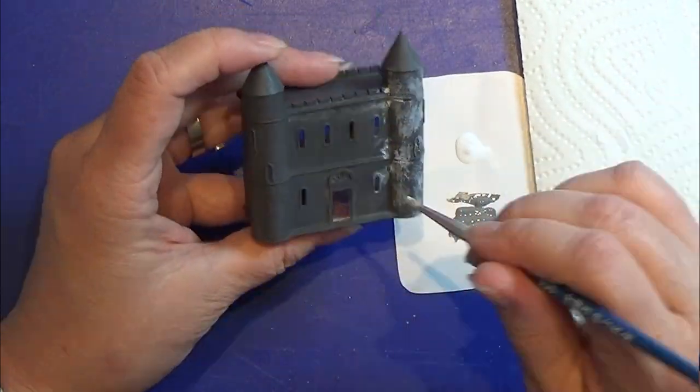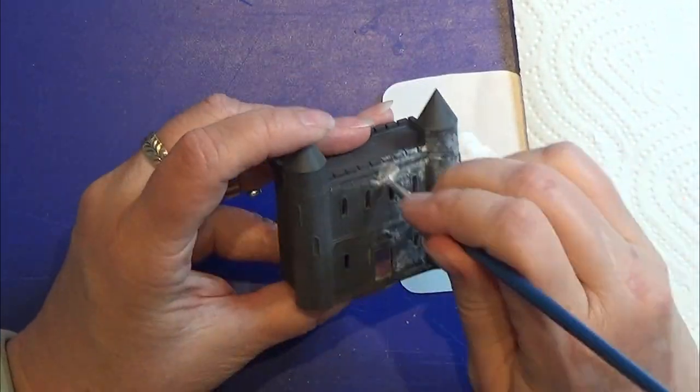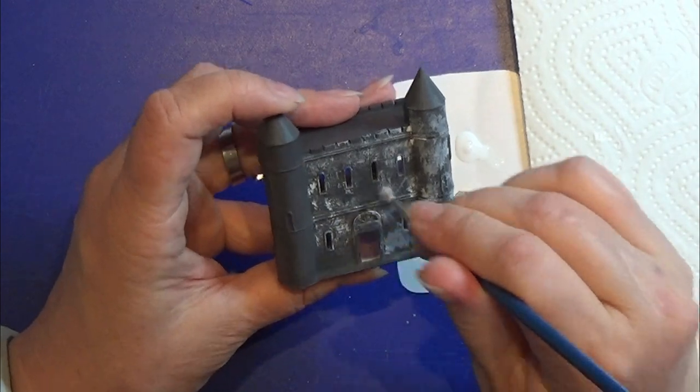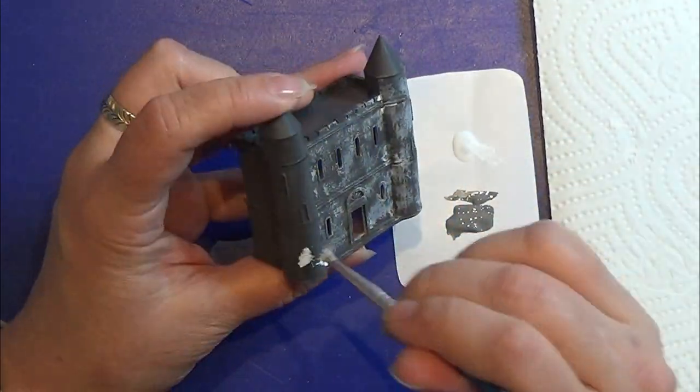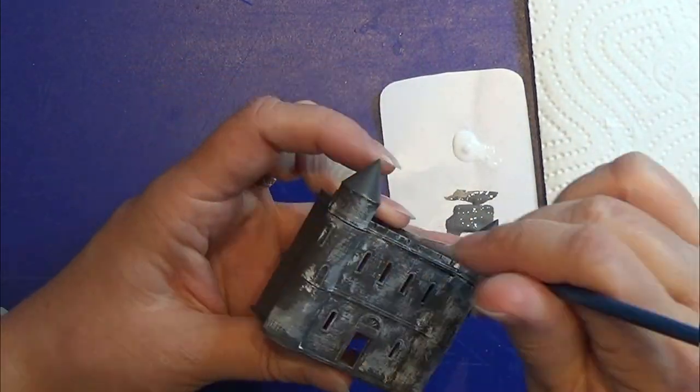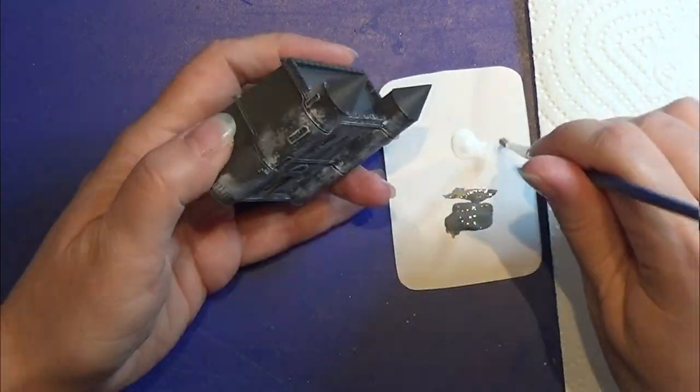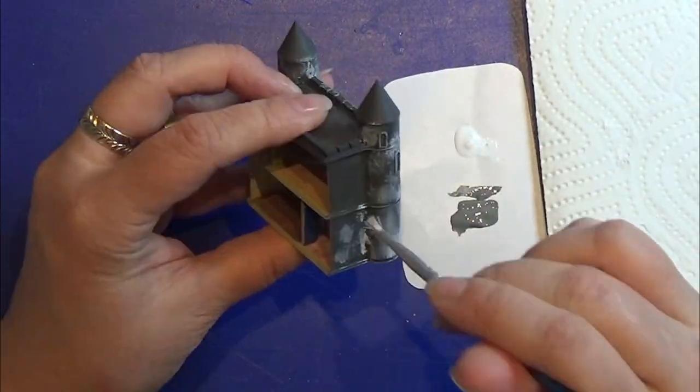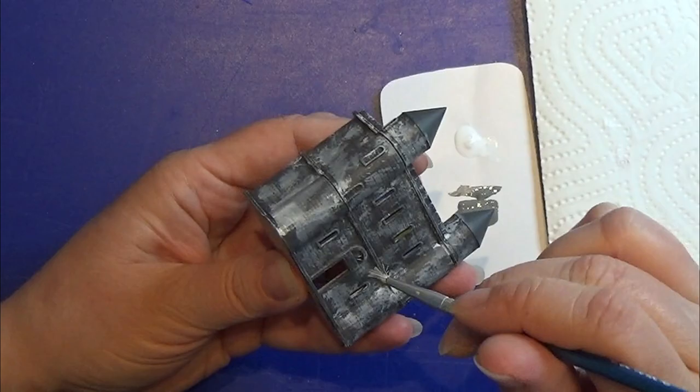I'm using a dry brush technique to put these white spots or speckles on the house, on the front of it. I'm doing that on all the wall parts here and the roof of this little castle.